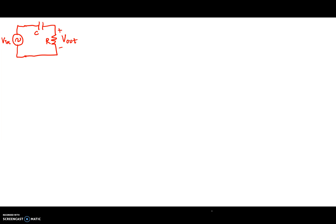We'll start out by trying to come up with the transfer function for this particular circuit. Let's write down the impedance of the capacitor, which is equal to 1 over jωC. The capacitive impedance and the resistive impedance are in series with each other, so by voltage divider, we can write that V out equals the resistor divided by the resistor plus the impedance of the capacitor, times V in.